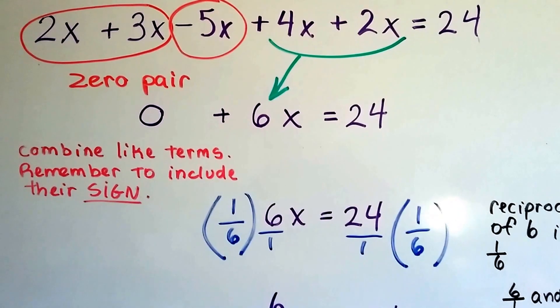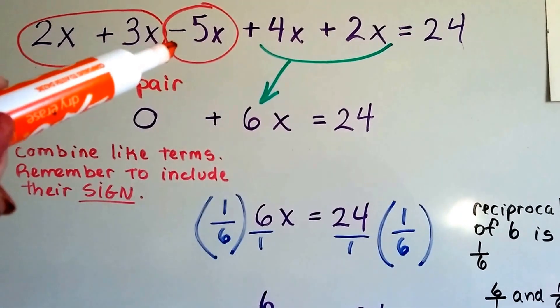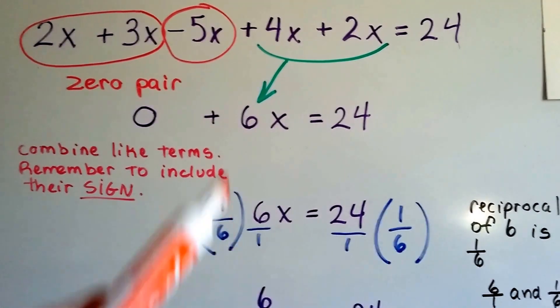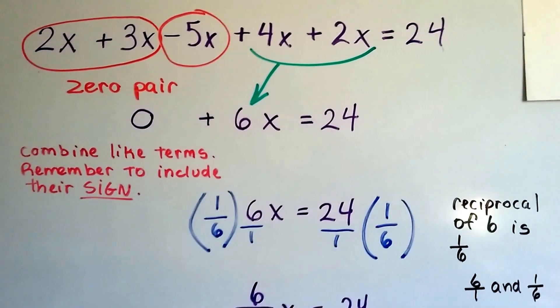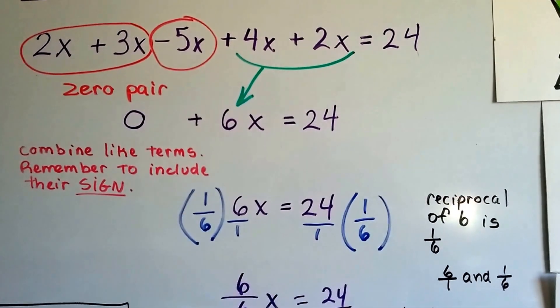We combine like terms, and we have to remember to combine their sign. Their sign goes with them. It's not just the 5x. It's a negative 5x. It's an inverse of 5x.